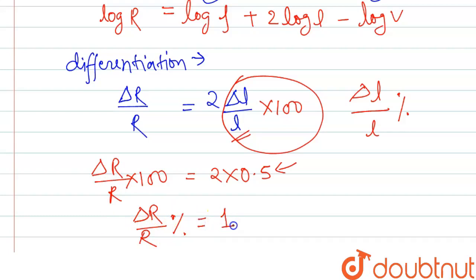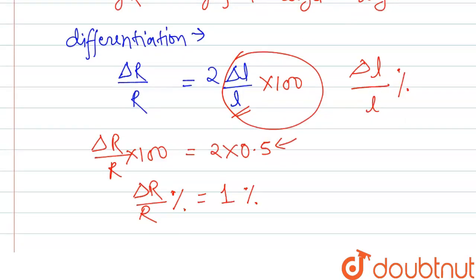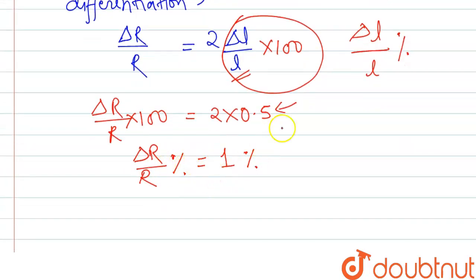ΔR/R × 100. So here we can write ΔR/R percent = 1%. So what we got: the change in resistance is 1%. If the length is changing by 0.5%, then the resistance is changing by 1%. So we can write that ΔR/R = 1%.